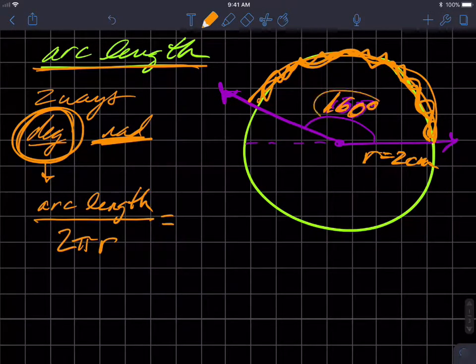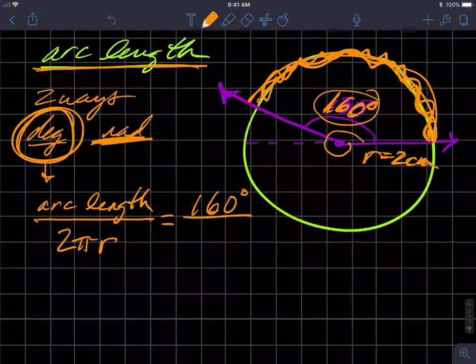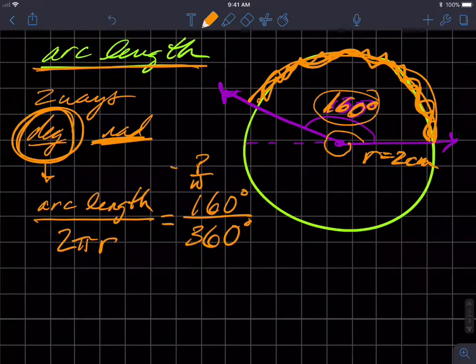So now 160 is part way angularly around the circle. We would refer to the central angle and all the way around the circle is 360 degrees. So part over whole equals part over whole. That's a proportion.